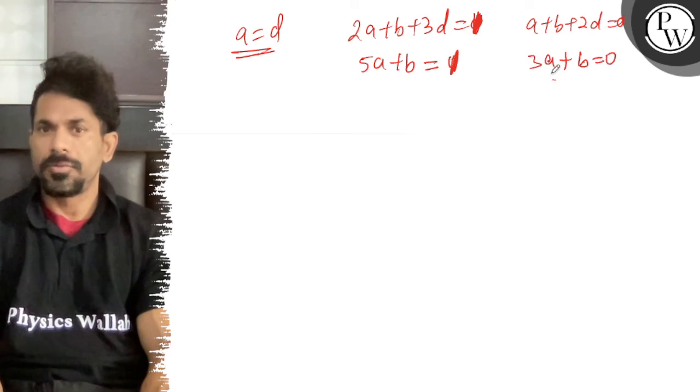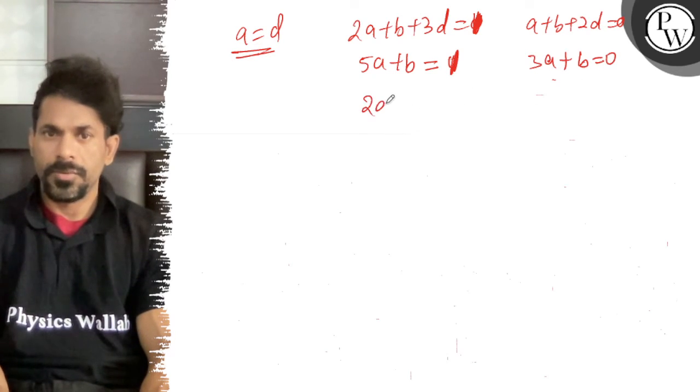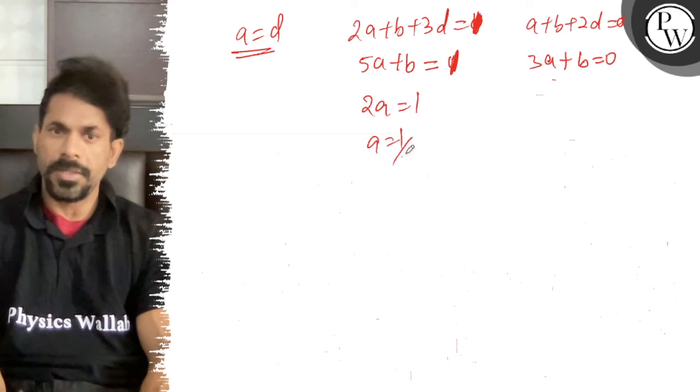So b is equal to minus 3 by 2 times a. So a is equal to half, and d is equal to half.